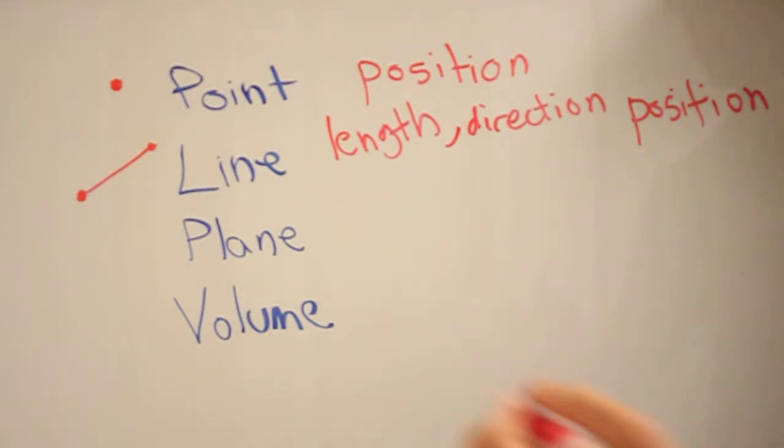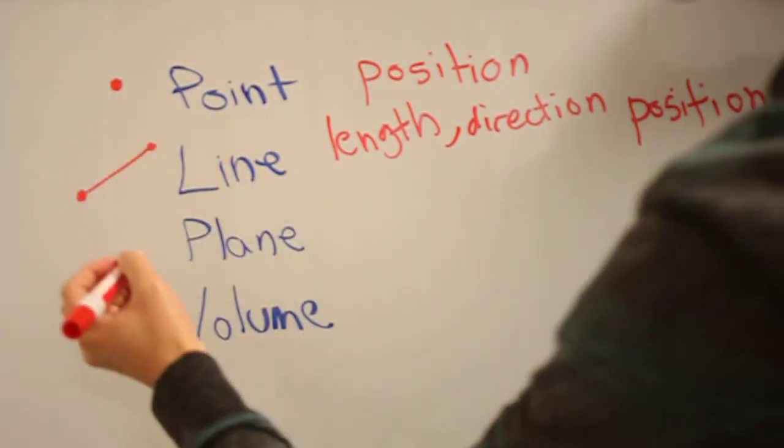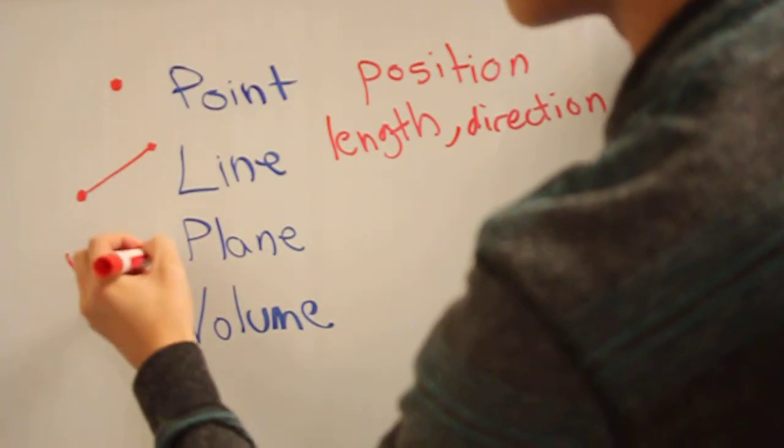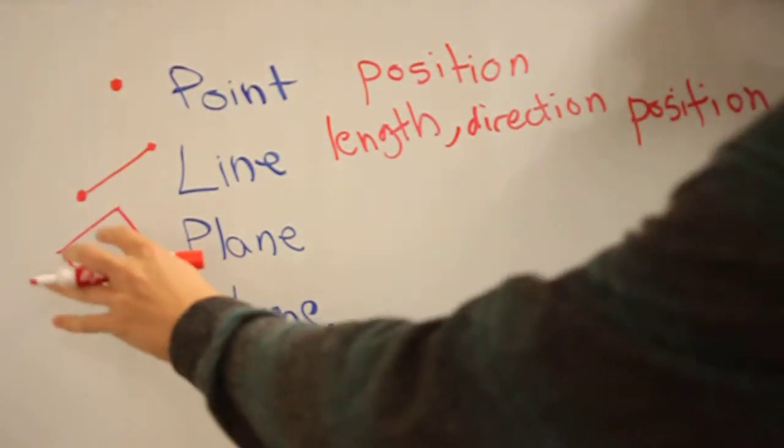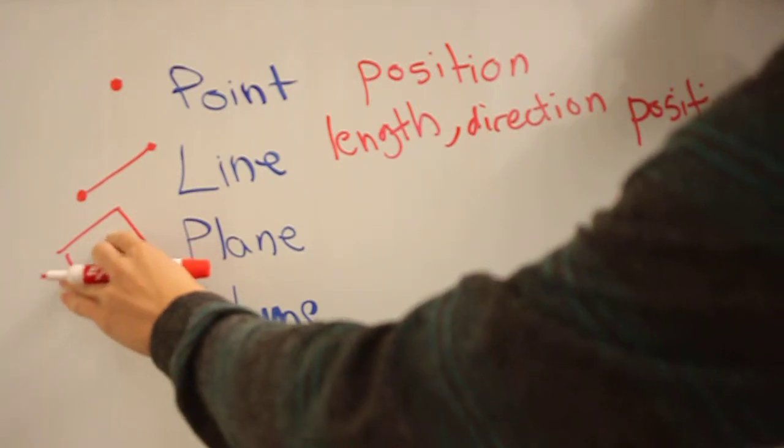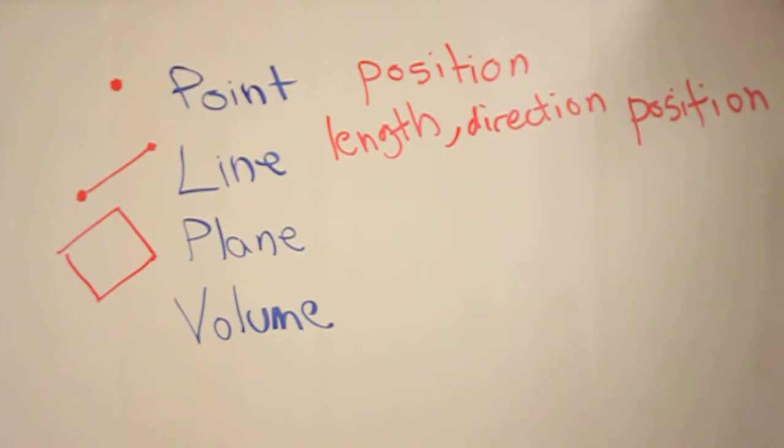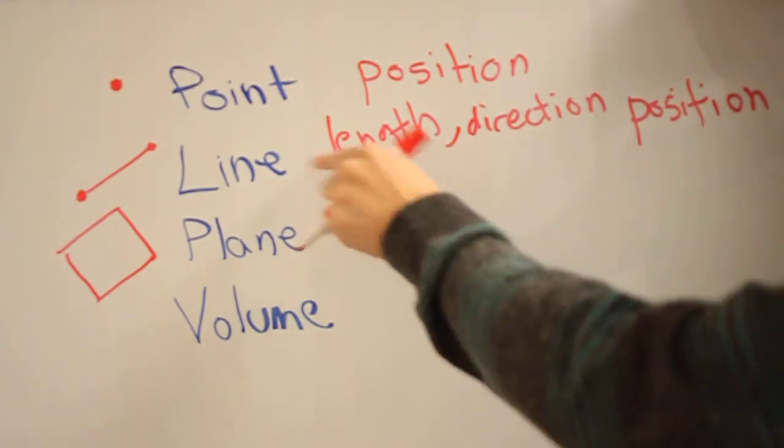After the line is a plane. For a plane, you just take that line and sweep it in one direction. And now you've defined the plane on which these two lines both lie. The plane has added properties to that of a line.